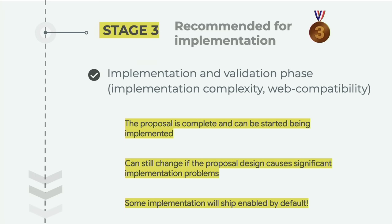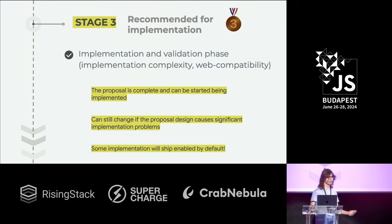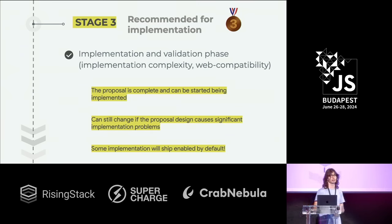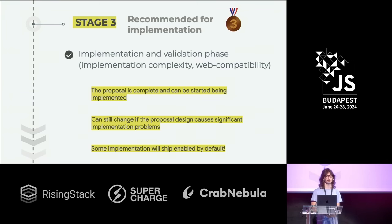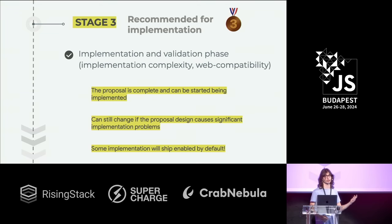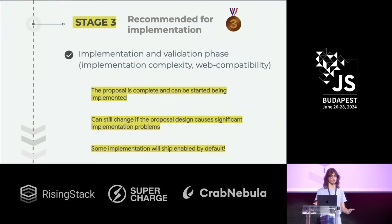Once the tests are written, the committee gathers and says: okay browsers, it's now time to start implementing this. Browsers will start implementing the proposal and might still find problems — maybe the proposal is too complex to implement, so we need to tweak things for better runtime performance or to avoid potential safety bugs. They also have to try shipping the proposal, maybe in beta or nightly versions of the browser, to make sure it's web-compatible and indeed does not break the web. It has happened multiple times: we thought everything was perfect, but maybe Firefox shipped it in nightly and it broke a website using a very old popular library. So we go back to the drawing board to figure out how to change the proposal.